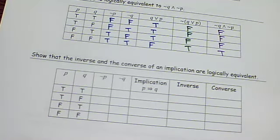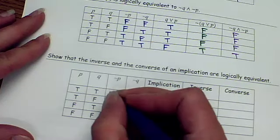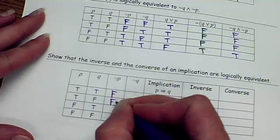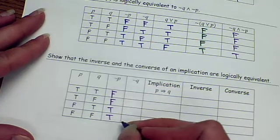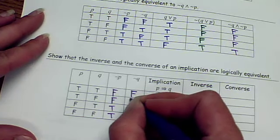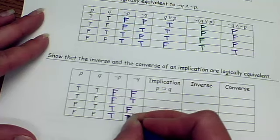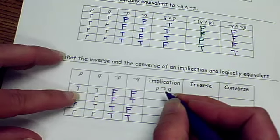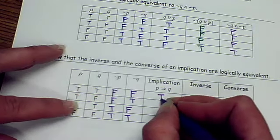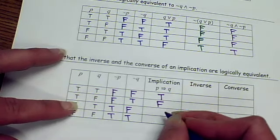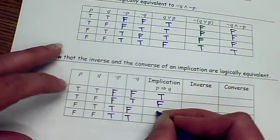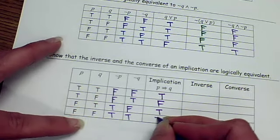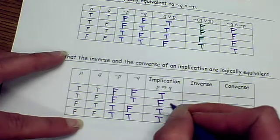Now the next one. True, true, false, false. So the negation will be false, false, true, true. Negate the Qs. False, true, false, true. So again, practicing with an implication, if then. True then true, good. True then false, not good. False then true, good. False then false is good. Remember, it's only when you lie.